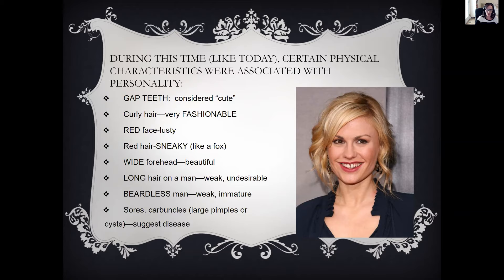In this fanciful fable, Chanticleer is a proud rooster who is tormented over a bad dream. His wife, a pretty little hen, scolds him in a nagging tone for being afraid: 'Have you a beard and call yourself a man? I cannot love a coward — no woman can. We want our husbands hardy, wise, and free. What is a dream? Nothing but vanity.' Notice she says you've got a beard but you're not acting like a man — there's that reference to men without a beard being weak and immature. With this, Chanticleer struts about the yard, deciding not to be afraid. Full of new pride and confidence, he speaks with the fox.